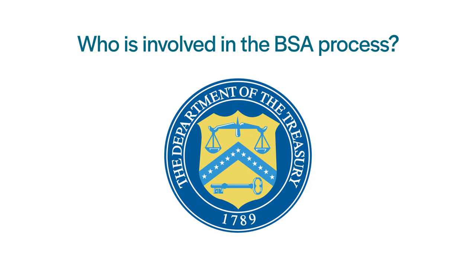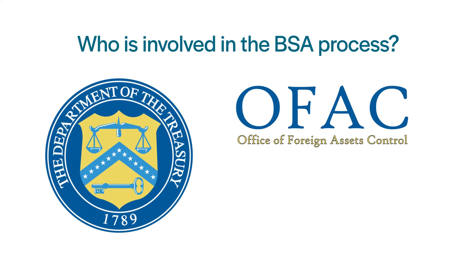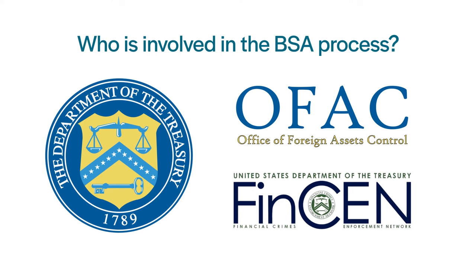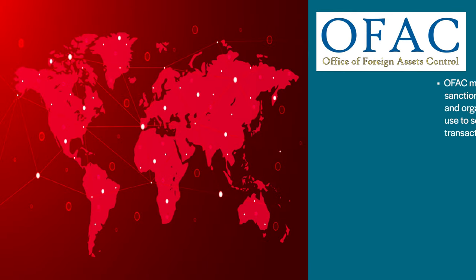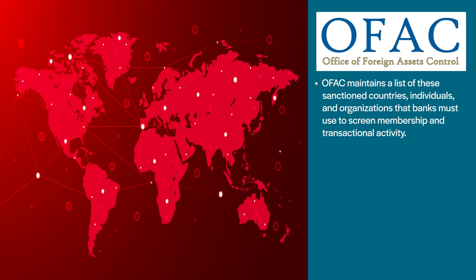Now let's see who's involved in the BSA process. There are two big players: the Office of Foreign Asset Control, or OFAC, and FinCEN. OFAC is a division of the U.S. Department of the Treasury, established in 1950 to implement economic sanctions against certain countries outside of the U.S. The intent is to keep financial institutions from interacting with those entities. OFAC maintains a list of sanctioned countries, individuals, and organizations that banks must use to screen membership and transactional activity, and it is updated regularly as more sanctions are added.